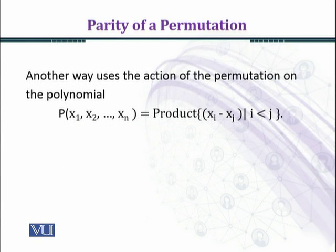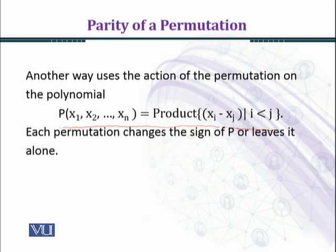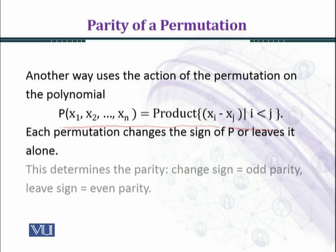Another way uses the action of the permutation on the polynomial P(x1, x2, ..., xn) which is given by the product (xi - xj) where i is less than j. Each permutation changes the sign of P, the polynomial, or leaves it alone. This determines the parity: change sign means odd parity, leave sign means even parity.